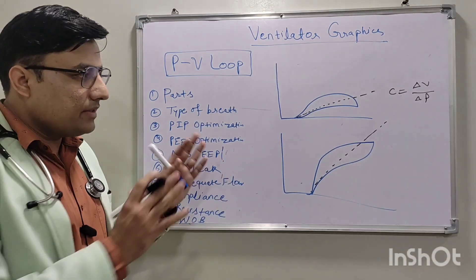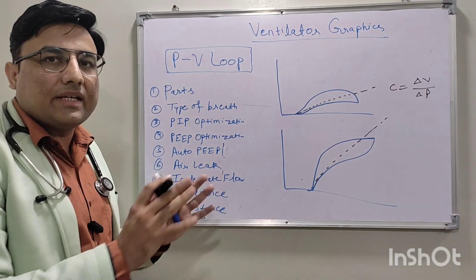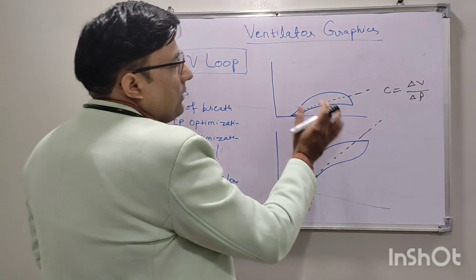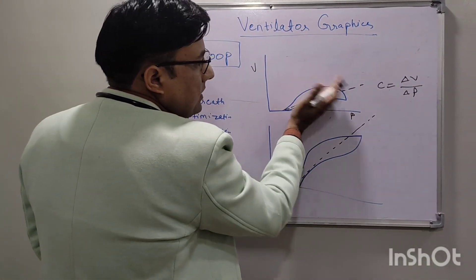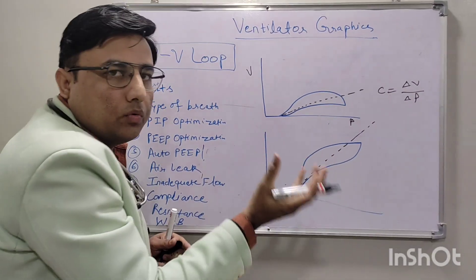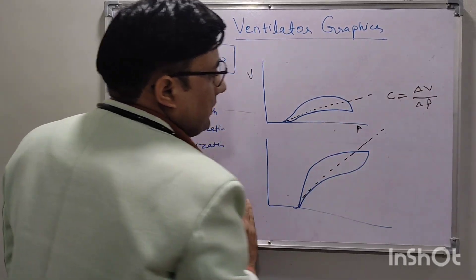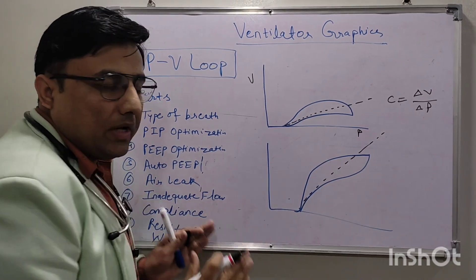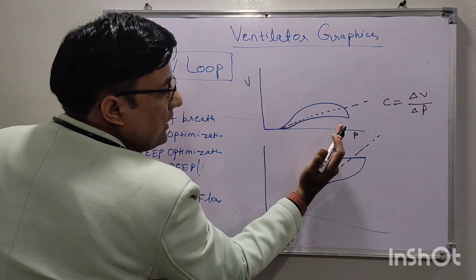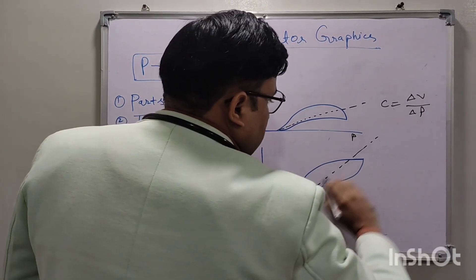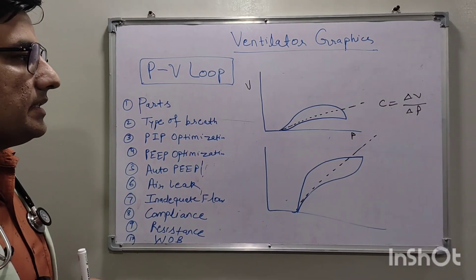We can also assess lung compliance by this graphic, including the change in compliance before and after surfactant. In a preterm baby with RDS, the PV loop appears very horizontal because compliance is poor — delta-V upon delta-P slope is very flat. After surfactant, compliance improves and the PV loop shifts to the left, becoming more vertical. This improvement in compliance can be assessed by this graphic.